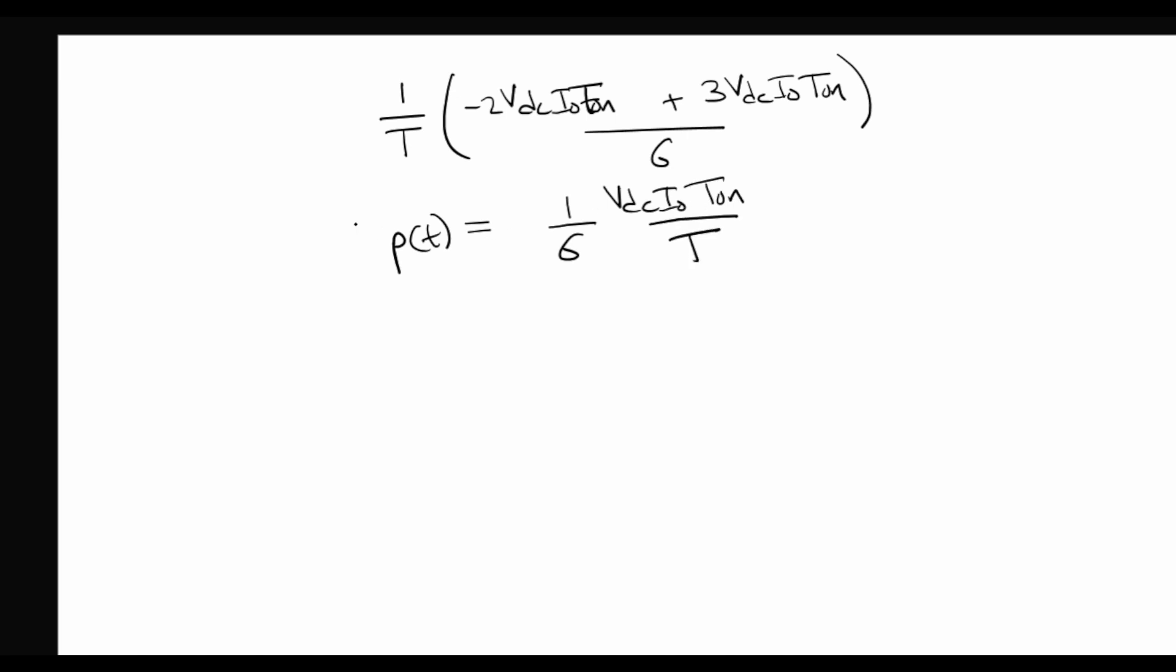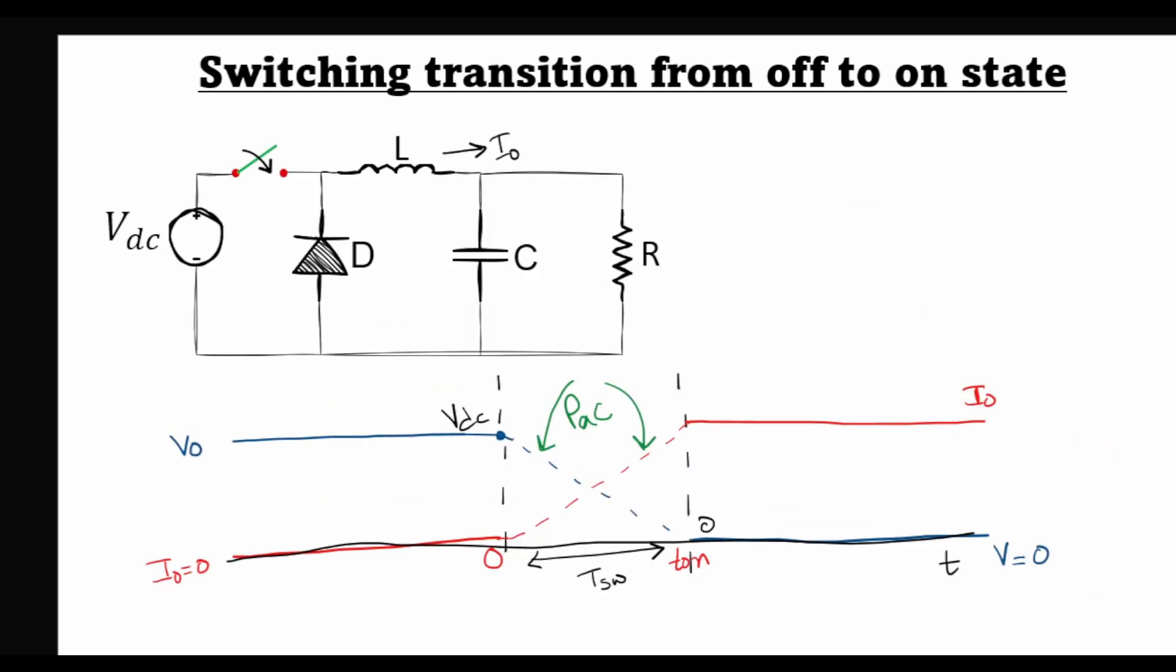Now this expression is giving the AC power loss during one switching transition from off to on, like this here.